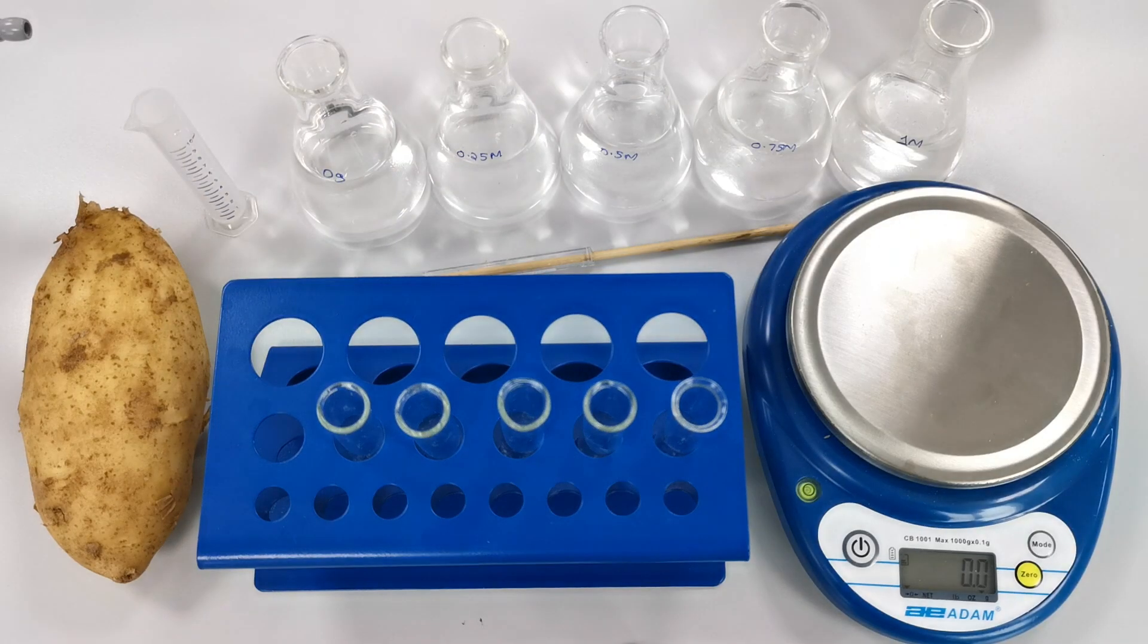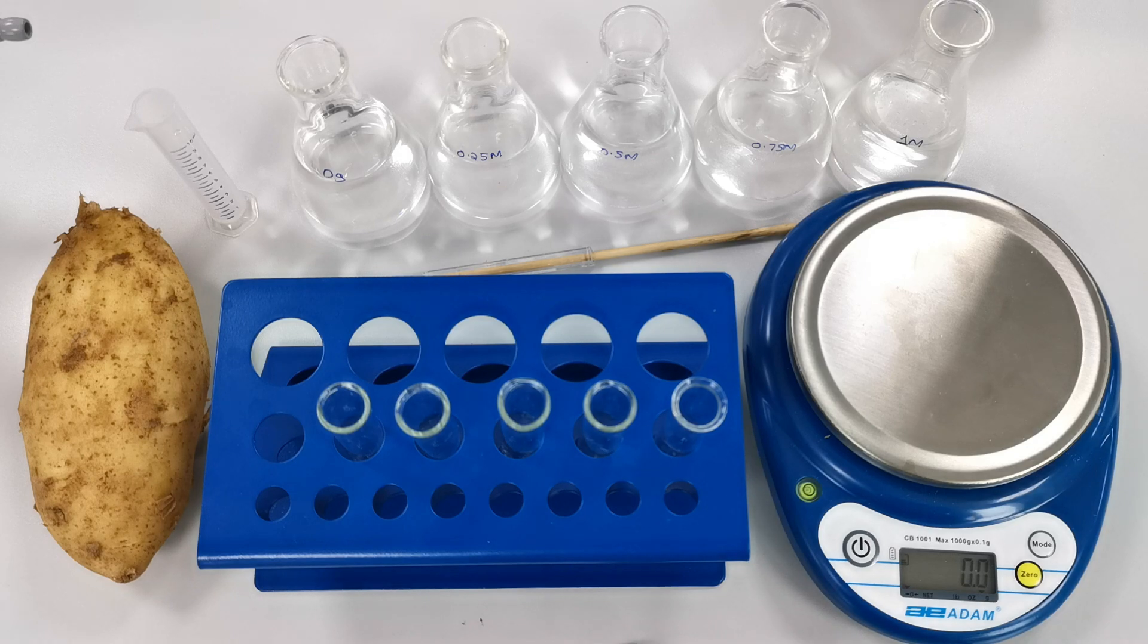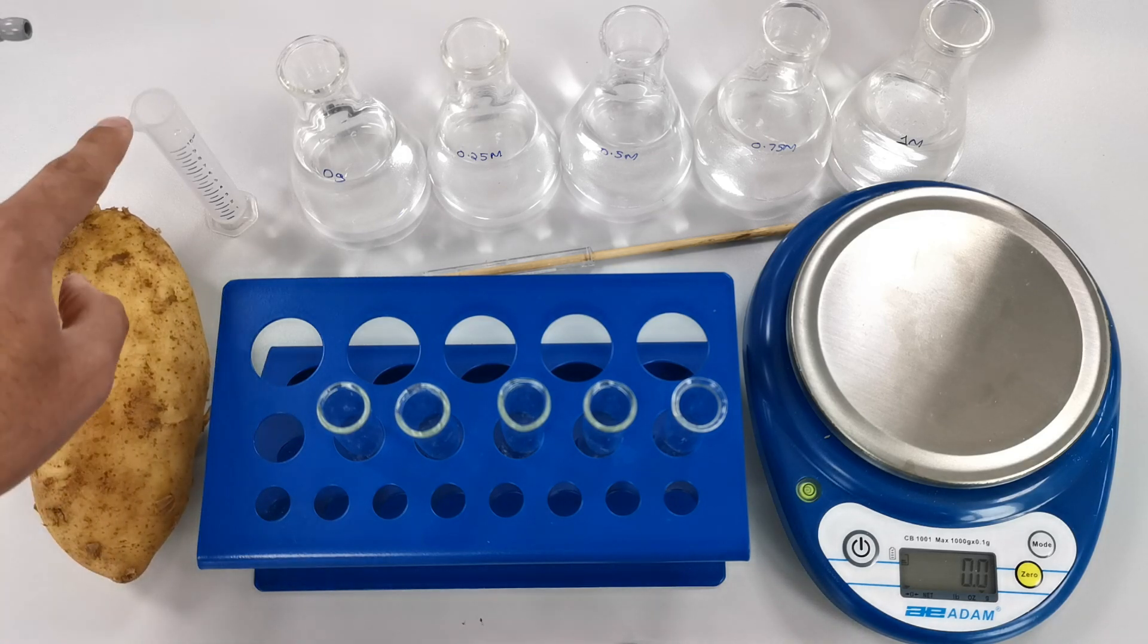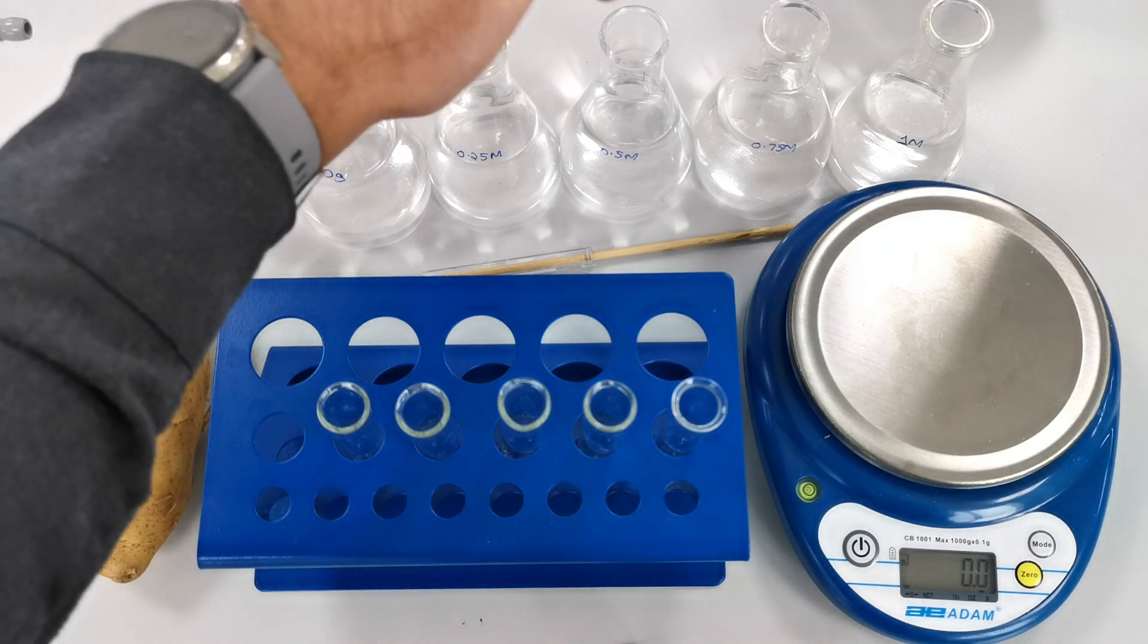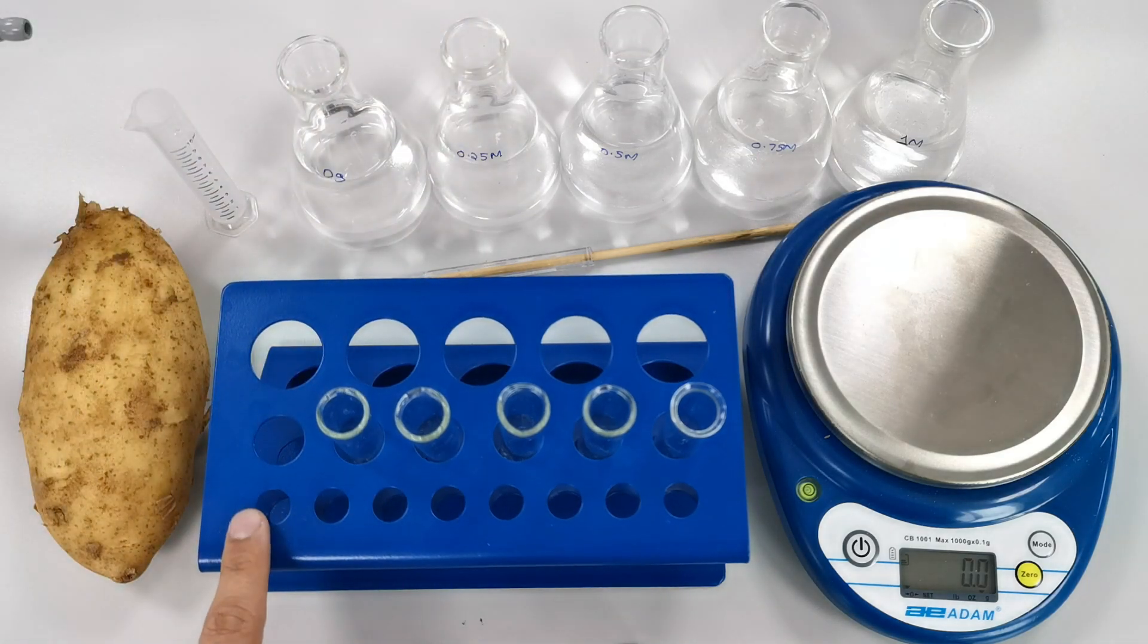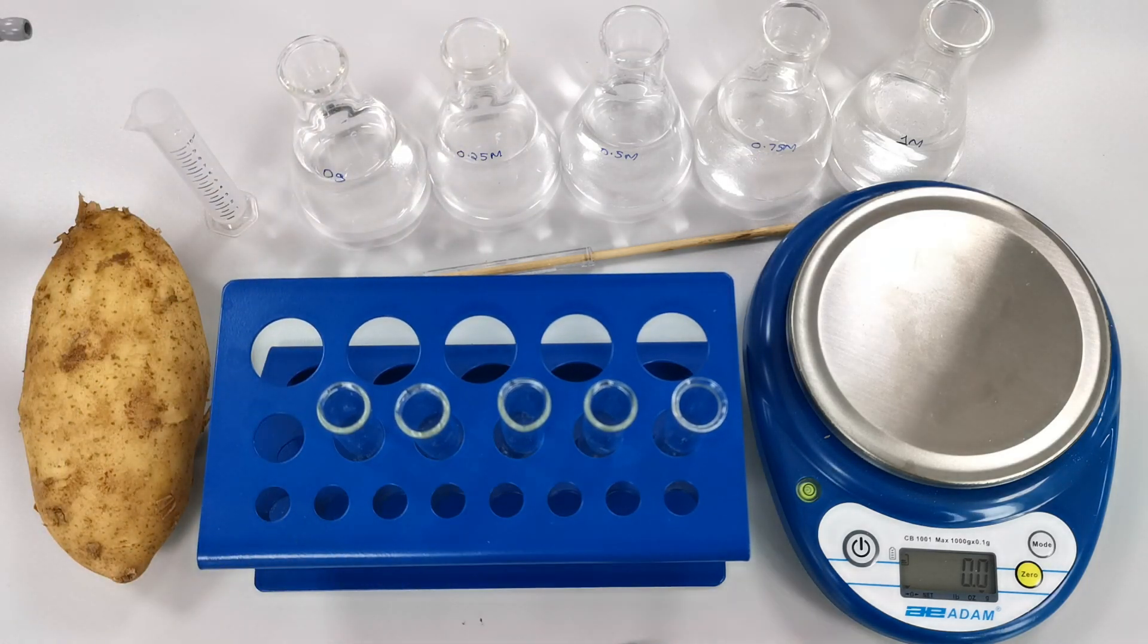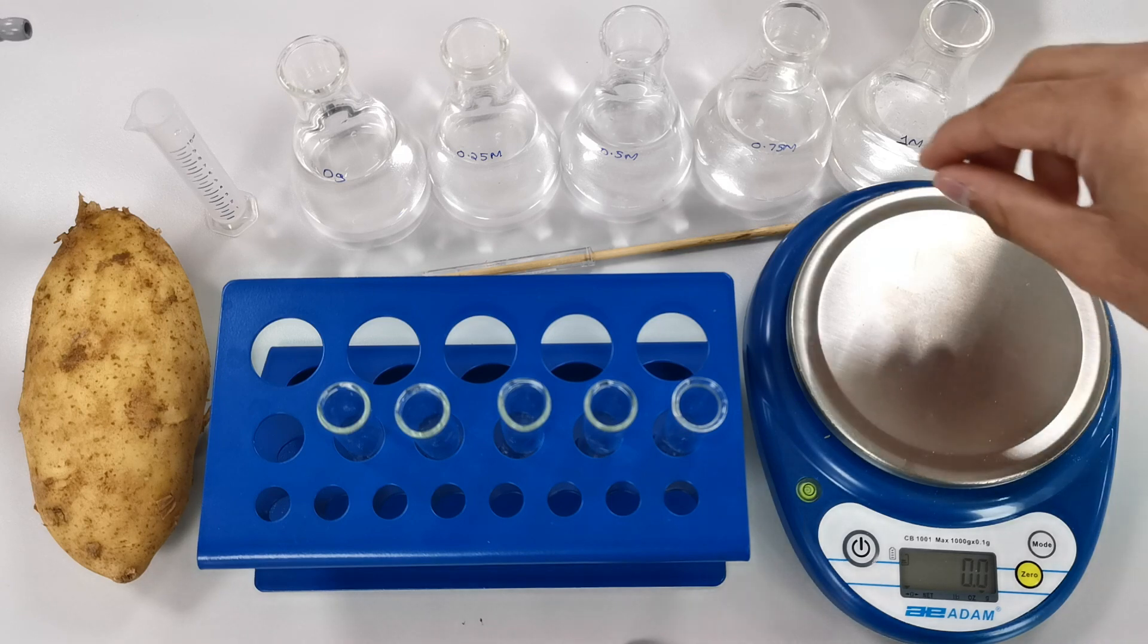This is the equipment you're going to need to complete the osmosis practical with potato cylinders. You're going to need a potato, a measuring cylinder, five concentrations of sucrose solution, a test tube rack, five test tubes, a mass balance, and a cork borer.